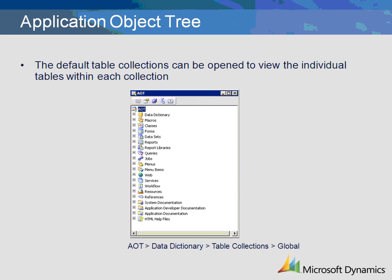To view table collections in the AOT, open the Data Dictionary, then open Table Collections. The default table collections can be opened to view the individual tables within each collection.